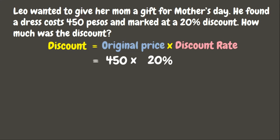Here, the original price of the dress is 450 pesos, while the discount rate is 20 percent. Now, before we can multiply, we need to change the percent into a decimal. To do that, change the percent sign into a decimal point and then move the decimal point two times to the left — one, two.